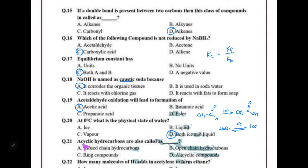Acyclic hydrocarbons are also called open-chain hydrocarbons — they are not in a cycle. So they are open-chain hydrocarbons. This is choice B.